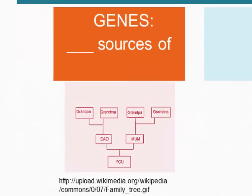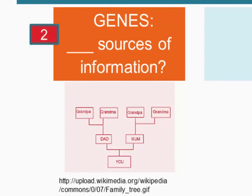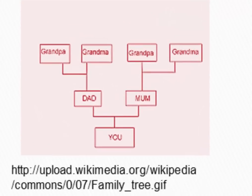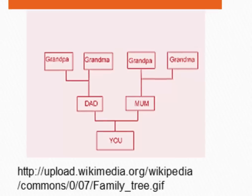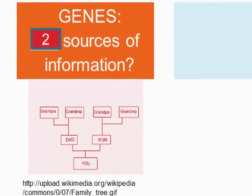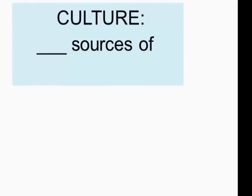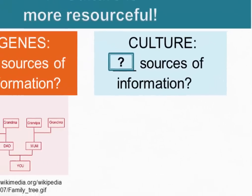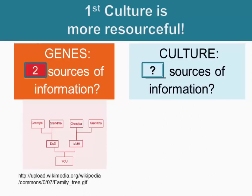When we look at genetic transmission, there are only two sources of information: your nuclear genetic material comes from your mother and your father. For each of us produced by sexual reproduction, there are two basic sources of genetic information. But when we look at culture, the number of sources of cultural information depends upon how many people we interact with.